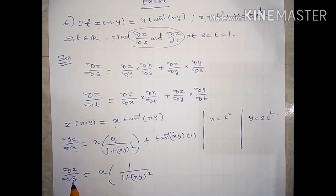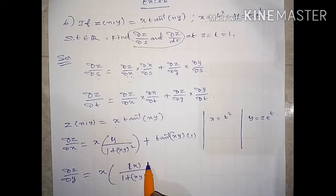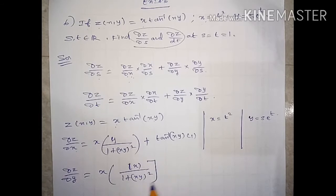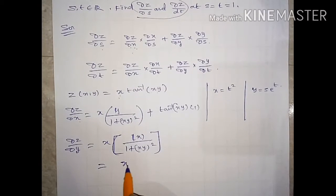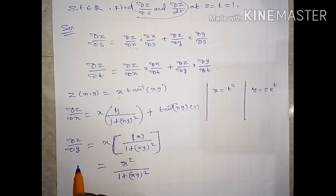For dou z by dou y: xy differentiates with respect to y, x is treated as constant, giving x square by (1 plus xy whole square). This is the dou z by dou y value.